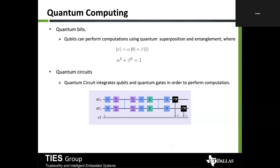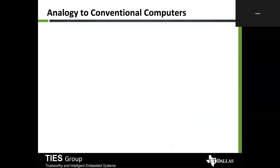Quantum circuits integrate qubits and quantum gates to perform computation. We have several quantum gates: Hadamard gates, X gates, CX gates, Toffoli gates, and so on. These gates in combination form a quantum computation — analogous to classical computation where you have AND gates, OR gates, and so on.